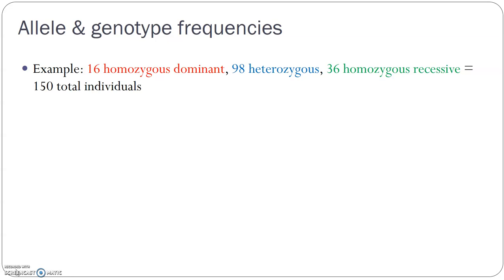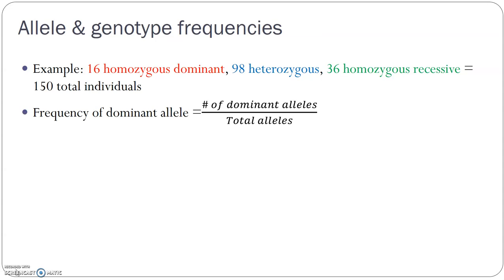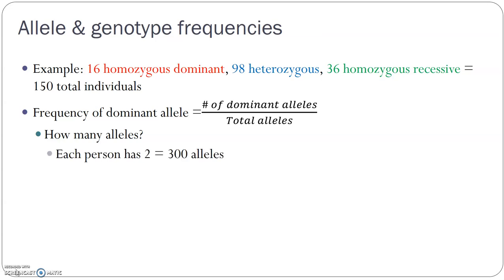This is going to be known data, so if you're given these numbers, these are the equations you'll be using. The frequency equations are much like the probability equations we looked at before — you can think of these as the percentage of the population. The frequency of the dominant allele is calculated by taking the number of all dominant alleles and dividing by the total number of alleles. Remember: allele does not equal individual — every individual has two alleles.